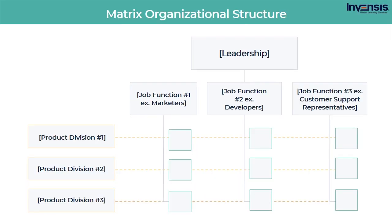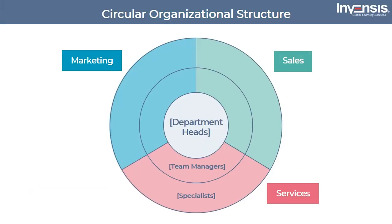A matrix organizational structure doesn't follow the traditional hierarchical model. Instead, all employees have dual reporting relationships. Typically, there is a functional reporting line as well as a product-based reporting line. When looking at a matrix structure org chart, solid lines represent strong, direct reporting relationships, whereas dotted lines indicate that the relationship is secondary. The circular structure promotes communication and the free flow of information between different parts of the organization. Whereas a traditional structure shows different departments or divisions as occupying individual, semi-autonomous branches, the circular structure depicts all divisions as being part of the same whole.